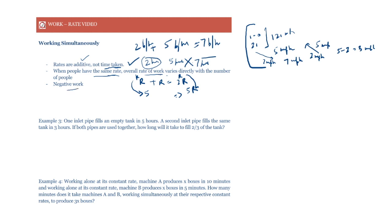Negative work is analogous to a boat going upstream, where the stream's speed is subtracted. For example, if one person is building 5 walls per hour and another person is breaking 2 walls per hour, the second person's rate is effectively negative. The overall rate is 5 minus 2 equals 3 walls per hour. We subtract rates when work is being undone.